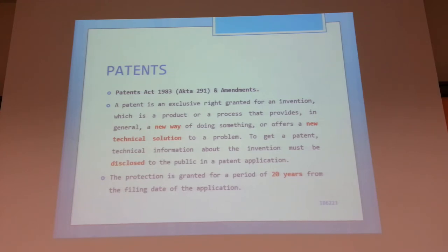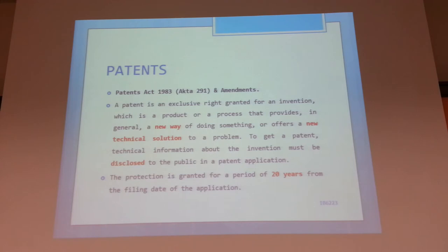Many companies will not file for patent because their patent is visible online, and any company in a country that is not a signatory to the patent treaty with Malaysia can copy your product, manufacture it, and sell it in their country. This is the caveat of patent versus trade secret — a patent goes into the public domain, a trade secret does not. You should be careful when deciding whether to file or not. You get 20 years of protection for your patents, with exclusive rights over them.